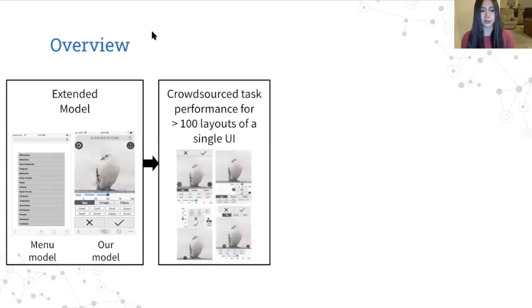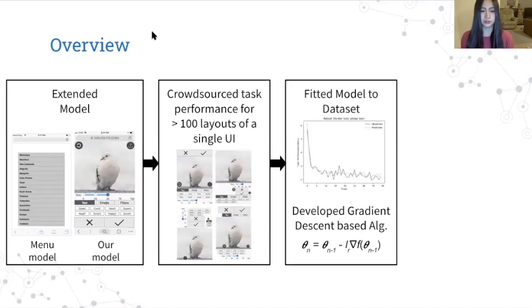To scope our work, we focused on improving the interface's layout, and by layout I mean the size and location of all the elements, like the buttons and sliders. So for our training data set, we generated over 100 different layouts of a single user interface, and then crowdsourced human task performance data for all the layouts. Next, we fitted our model to this data set, and then developed a gradient descent-based algorithm that could update the layout to improve its predicted task performance.